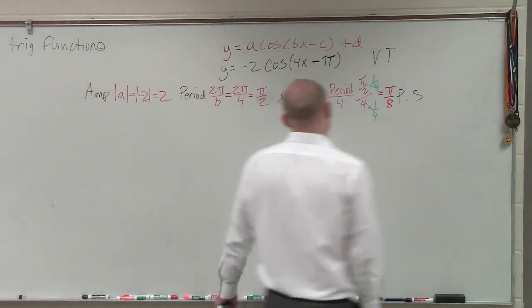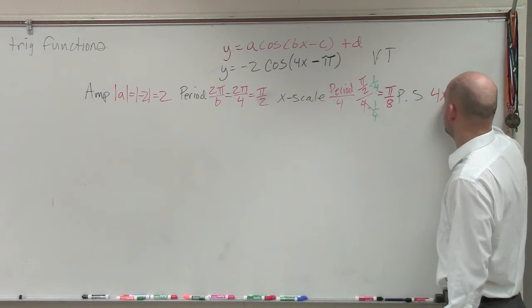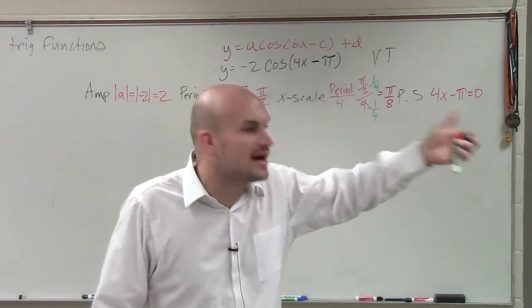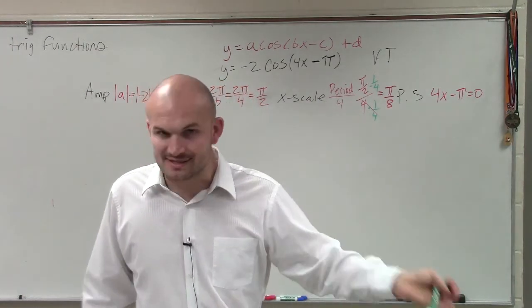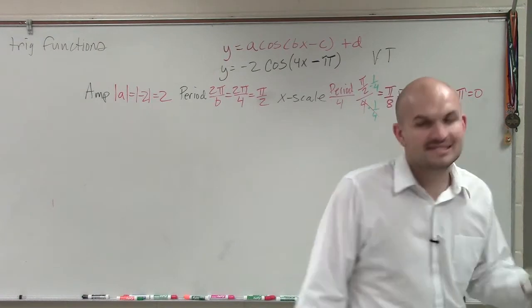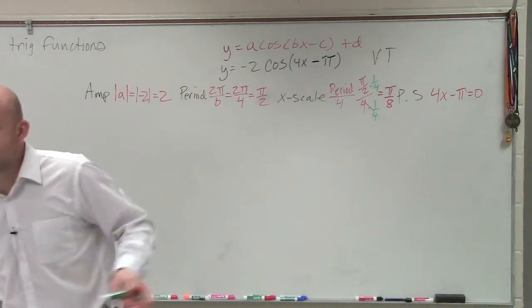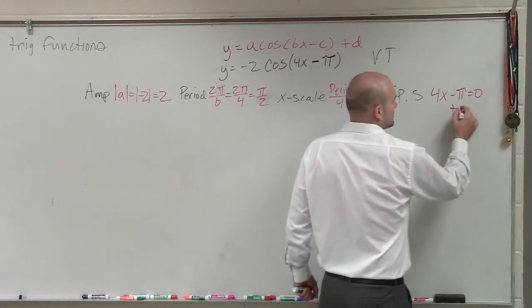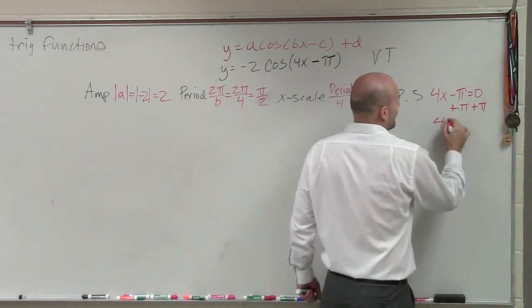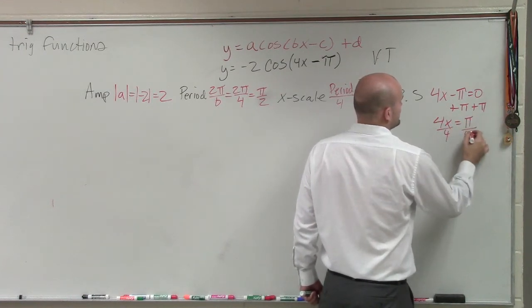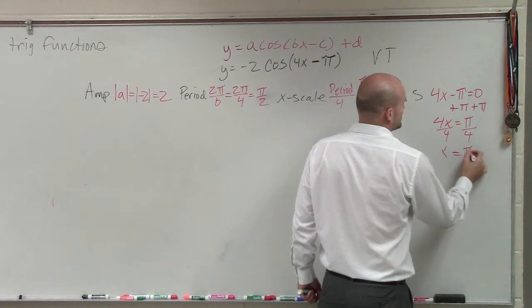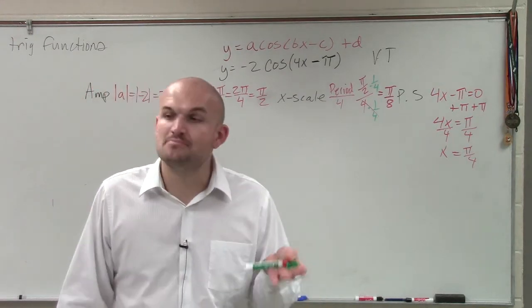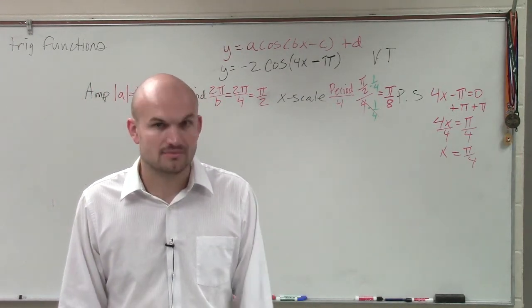And then last one is the phase shift. Remember, the phase shift, I say take 4x minus π equals 0. Everybody wants to say, oh, it's shifting π units to the right. Everybody wants to say this, but they don't want to set it equal to 0. Set it equal to 0 so you don't forget and make a mistake. Because guys, when I solve for x, I have 4x equals π, divide by 4, x equals π over 4. So my phase shift is not π units to the right. My phase shift is π over 4 to the right.